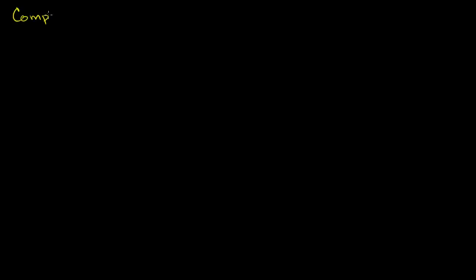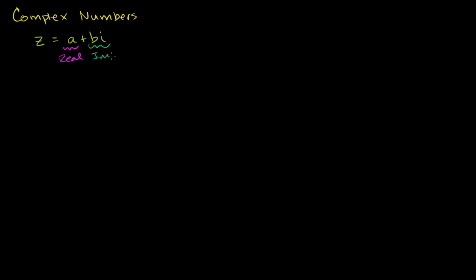What I want to do in this video is make sure we're comfortable with ways to represent and visualize complex numbers. So you're probably familiar with the idea. A complex number, let's call it z — and z is the variable we tend to use for complex numbers. Let's say that z is equal to a plus bi. We call it complex because it has a real part and it has an imaginary part.